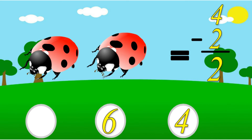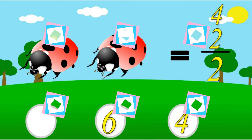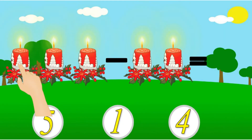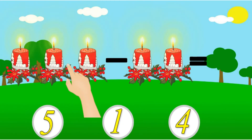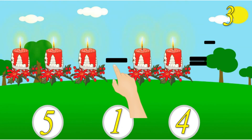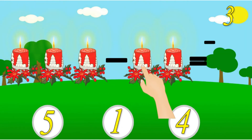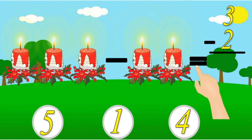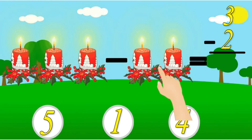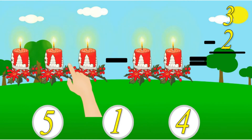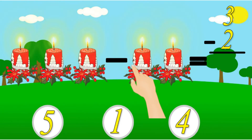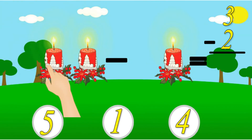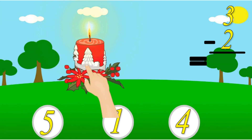Next: 1, 2, 3. There are 3 candles minus 1, minus 2, equal. Now let's solve: 3 candles minus 1 and minus 2. There is only 1 candle left. The right answer is 1.